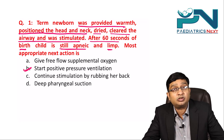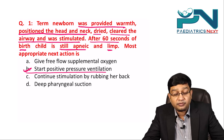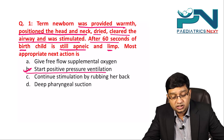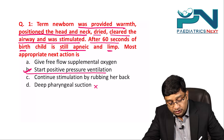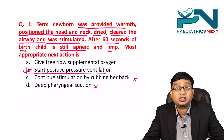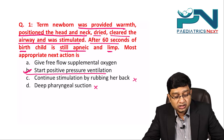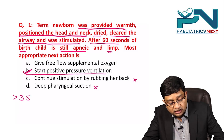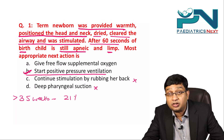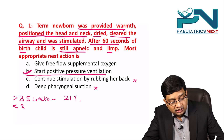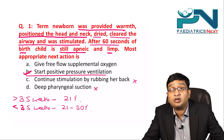The answer to question one is choice B — start positive pressure ventilation. Deep pharyngeal suction is no longer recommended. Continuous stimulation will not help. Free-flow supplemental oxygen is not required. Resuscitation guidelines clearly state that for more than 35 weeks gestation, always start with 21% oxygen. For less than 35 weeks, start with 21 to 30% oxygen.